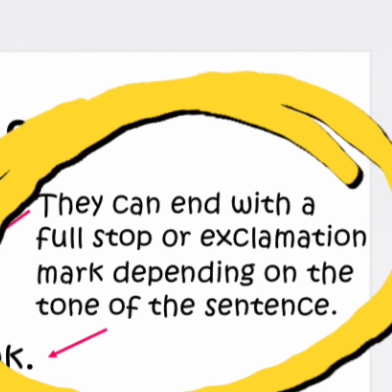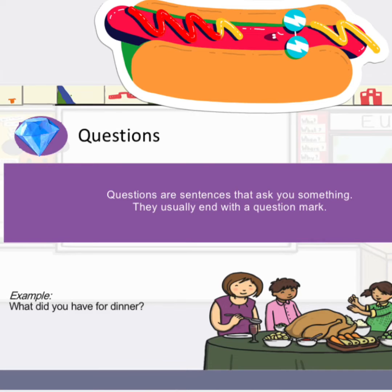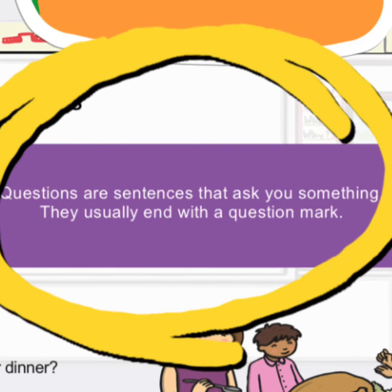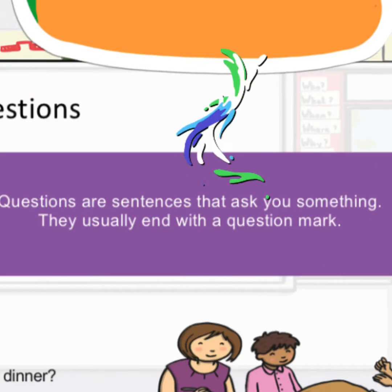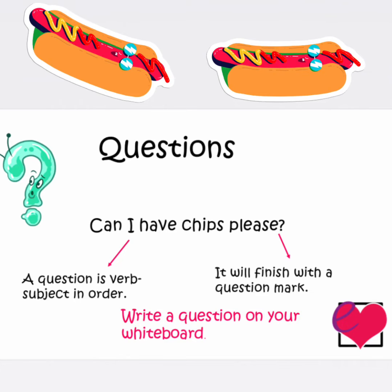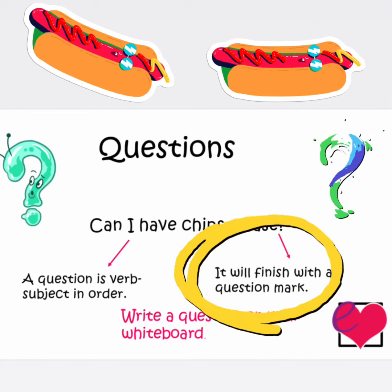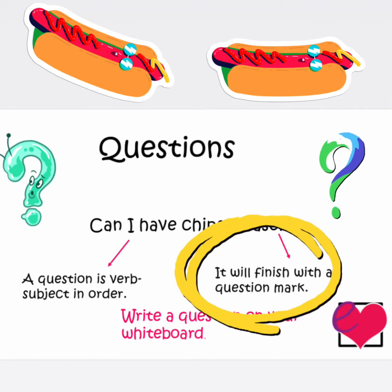A command can end with a full stop or an exclamation mark, depending on the tone of the sentence. I want you to think of a command. Next are questions, or interrogative sentences. These types of sentences usually ask questions and end with a question mark. For example: 'Can I have chips please?'